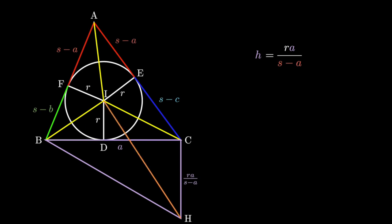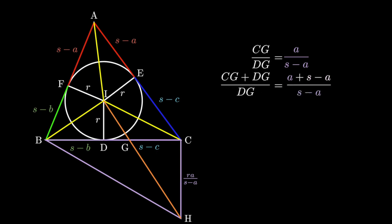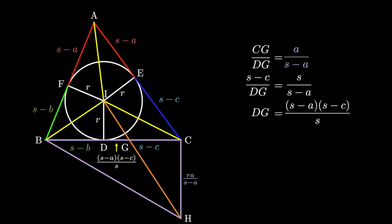Now if we connect i and h and label the point of intersection with bc as g, we have two similar triangles, IDG and HCG. From similar triangles, CG over DG is equal to CH over DI, which is ra over s minus a all over r, which then simplifies to a over s minus a. Look what happens when we add one to both sides. Since CG plus DG equals CD, and a plus s minus a equals s, we have CD over DG equals s over s minus a. We also know CD equals s minus c, so we can solve for DG. DG equals s minus a times s minus c over s. Just by adding one, we found a length with three of the four terms found in Heron's.